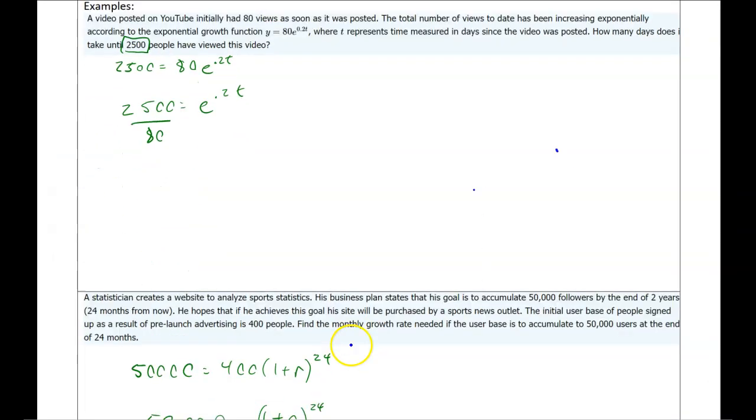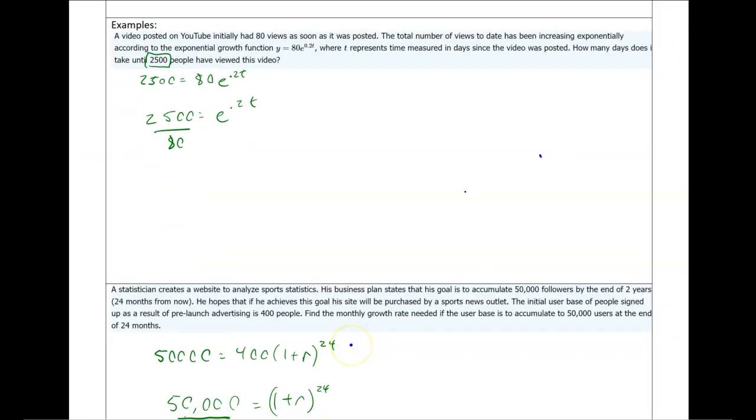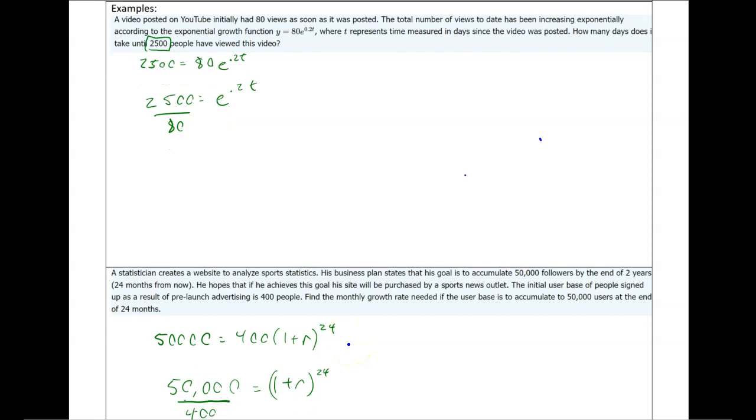Where we're going to start actually is with our two examples, and I've given you both the setup and the first step for each of these. What we really want to emphasize is how to solve each of these. Notice here our variable is a t, here our variable is an r, and they're in different places in the model.